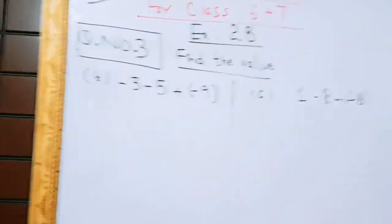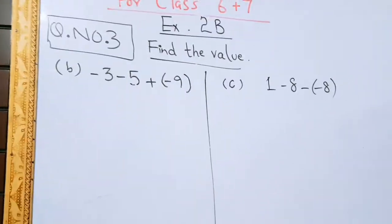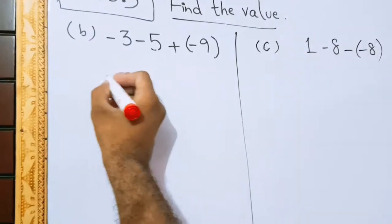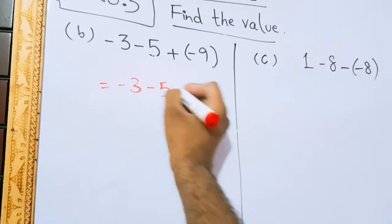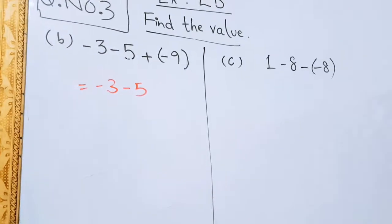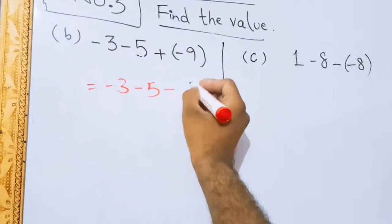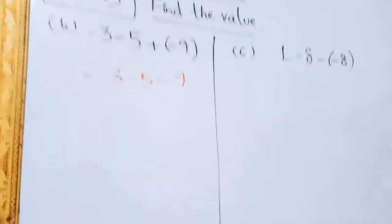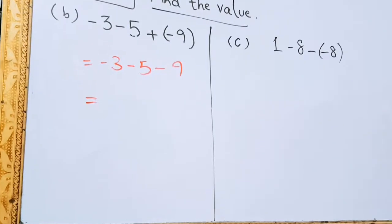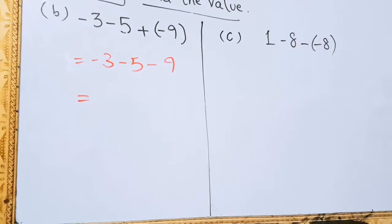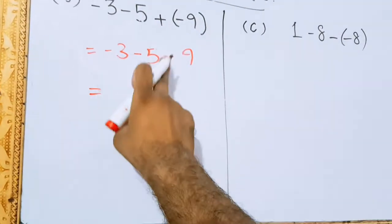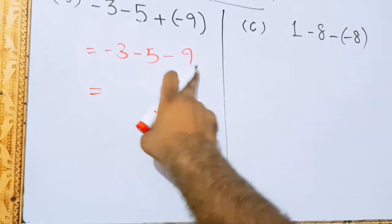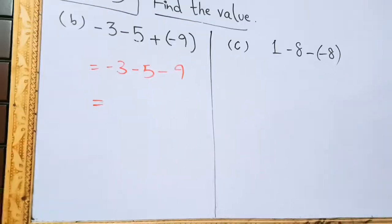Minus 3 minus 5 plus into minus 9. Minus 3 will be written as it is. Minus 5 will be written as it is. First of all, our duty is to open the bracket. Plus minus gives minus, and minus 9 will be written. Now we shall perform operation on two digits at a time. We cannot perform the operation on three digits. Like this is one digit, this is second digit, and this is third digit. We should not add or subtract three of them all together. We should select any two.